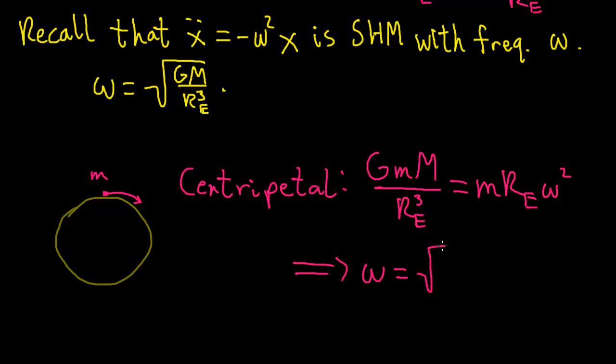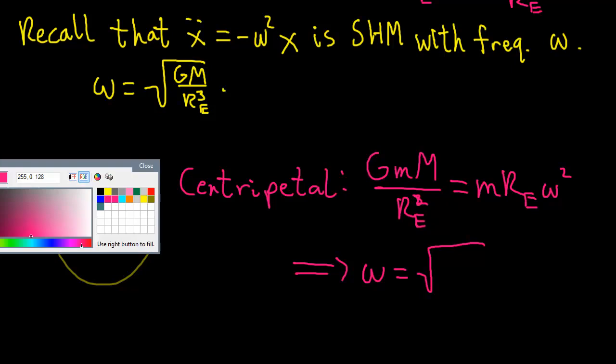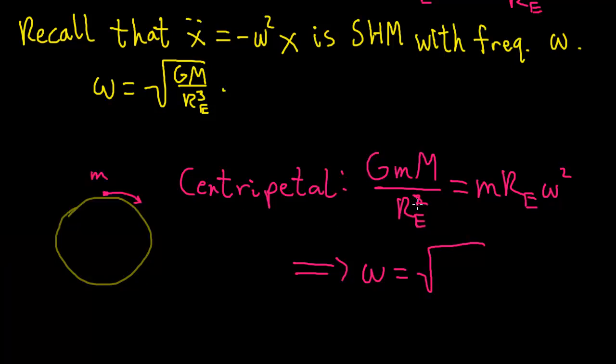In this case as well, the frequency of the satellite, cancelling the m's and, sorry, this should be squared, GMm over r squared, let me fix that. I got a little over zealous and wrote an r cubed, but it becomes a cubed when I divide by this additional factor of R_E over here. So then this ω = √(GM/R_E³).